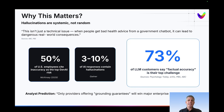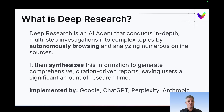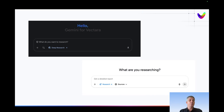Let me jump into what deep research is. Deep research is when an AI agent conducts an in-depth, multi-step investigation — usually by autonomously browsing or searching the web — getting results and synthesizing all those results together to generate a comprehensive report with citations and all the information you need to answer a particular question. Many have implemented this sort of web-based deep research: Gemini, ChatGPT, Anthropic, Perplexity, etc. Here's an example of what it looks like — if you haven't used it, I highly encourage you to.